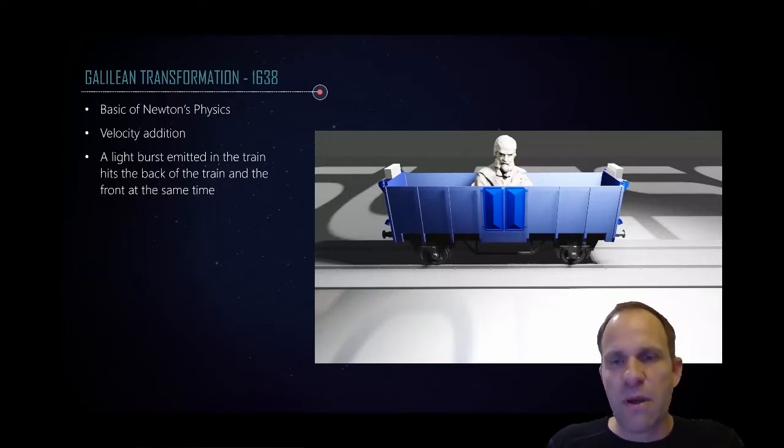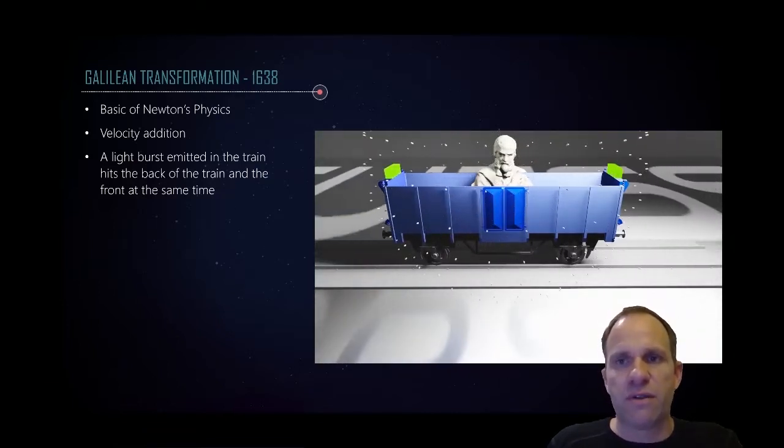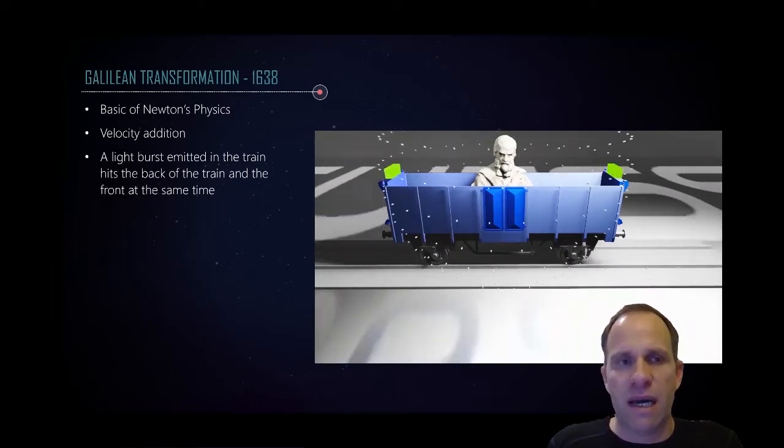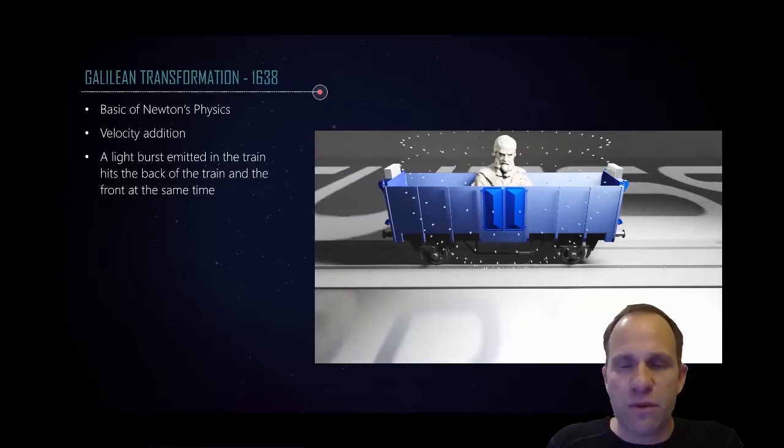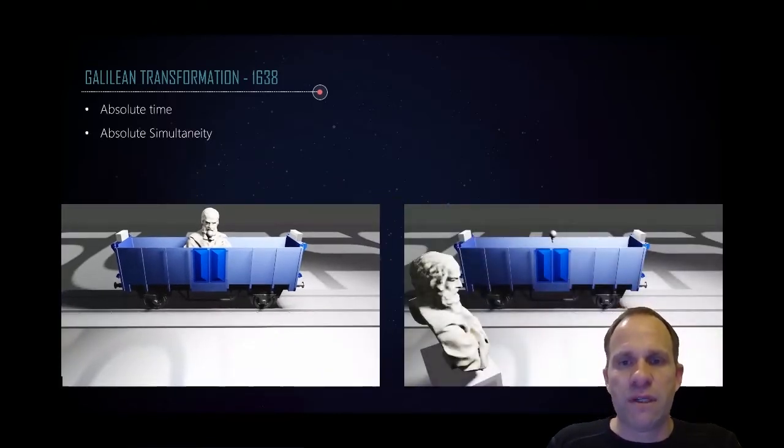Let's first locate Galileo Galilei in the center of a train car and he will emit a light burst. He will see that the light burst hits the front of the train and the back of the train exactly the same time. And he will observe exactly the same simultaneity from the train station.